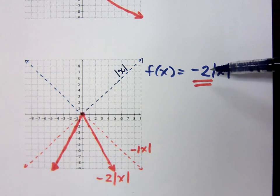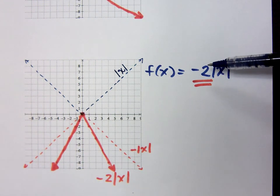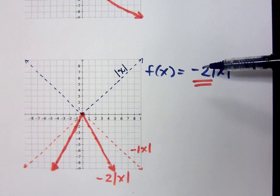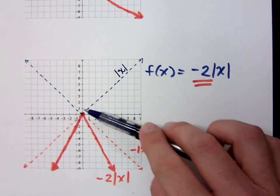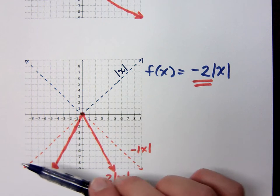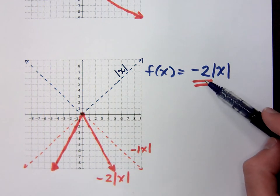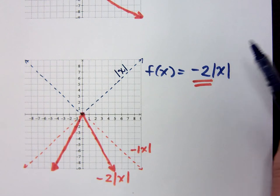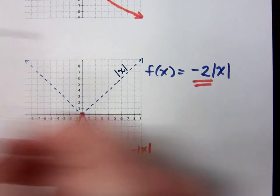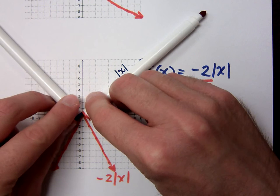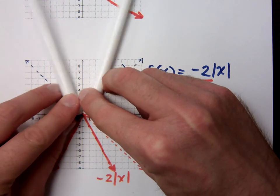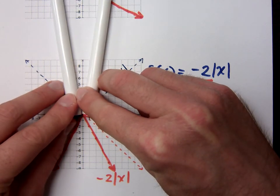If I'd made this guy negative 1 half, what would he be doing? It'd be opening down, but it would be not as steep, right? If I had this slope here as a positive 5, what would I be doing? Well, if it were a positive 5, like here's positive 1, a positive 5 would make it go even steeper, right?